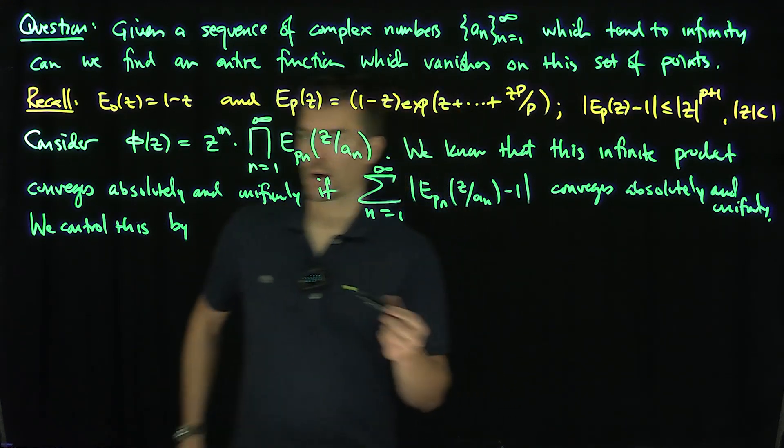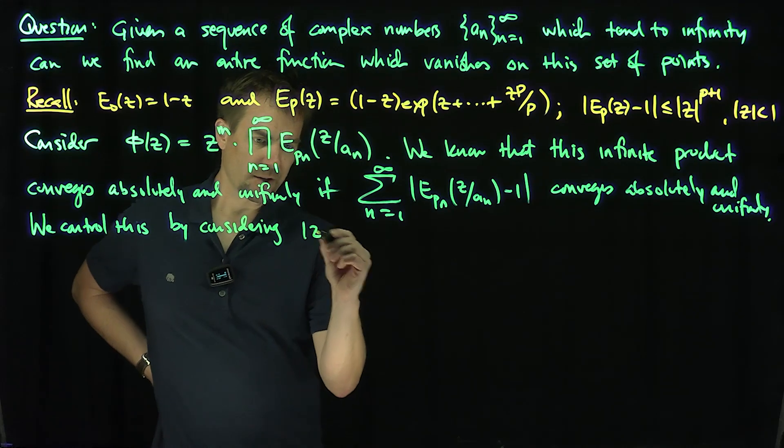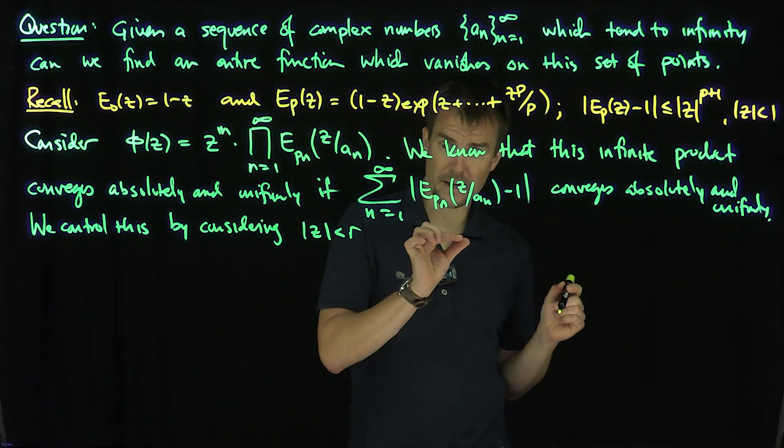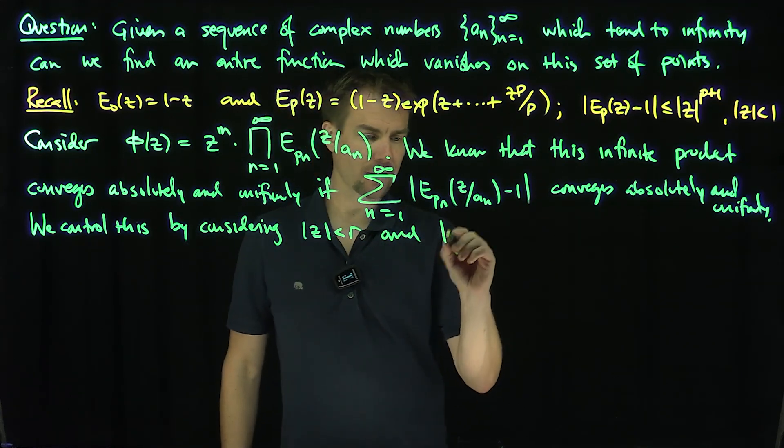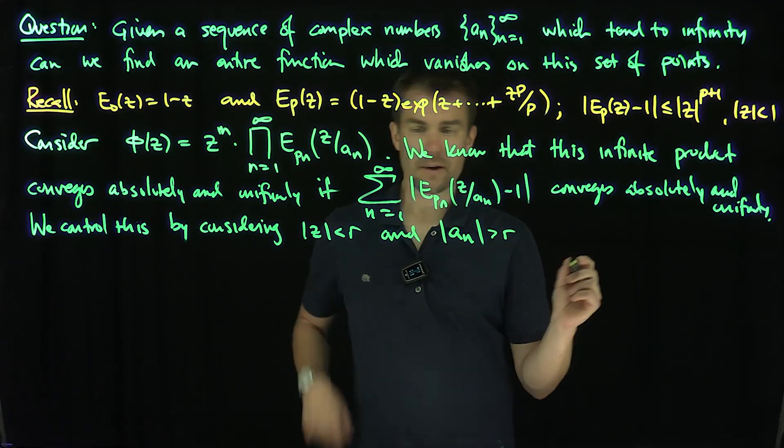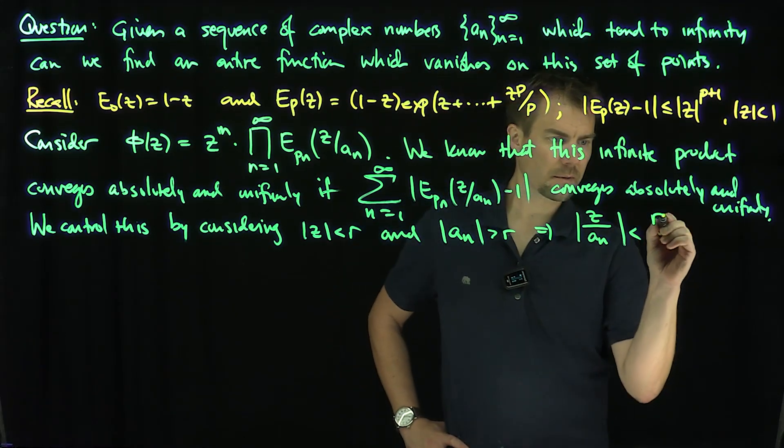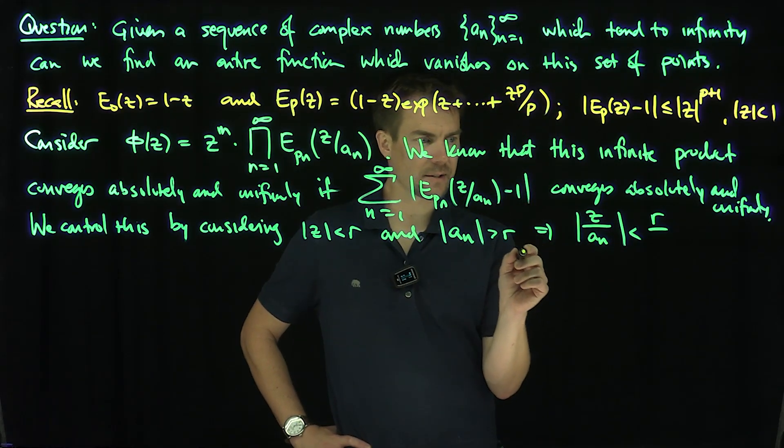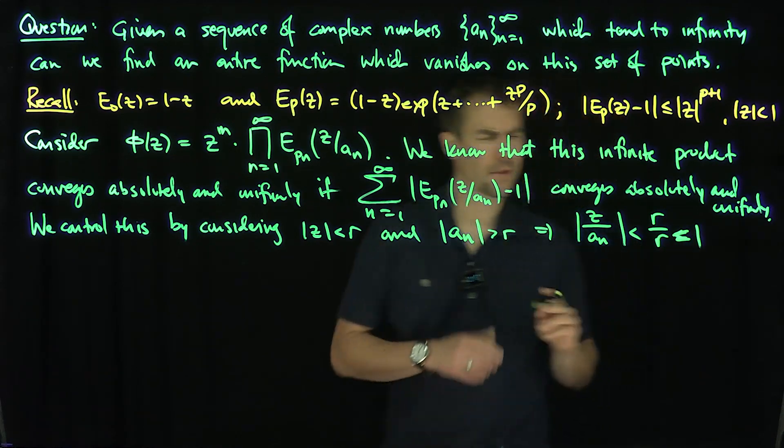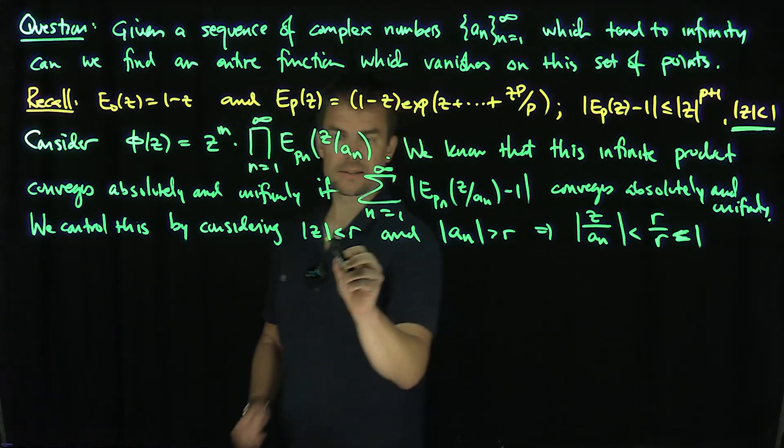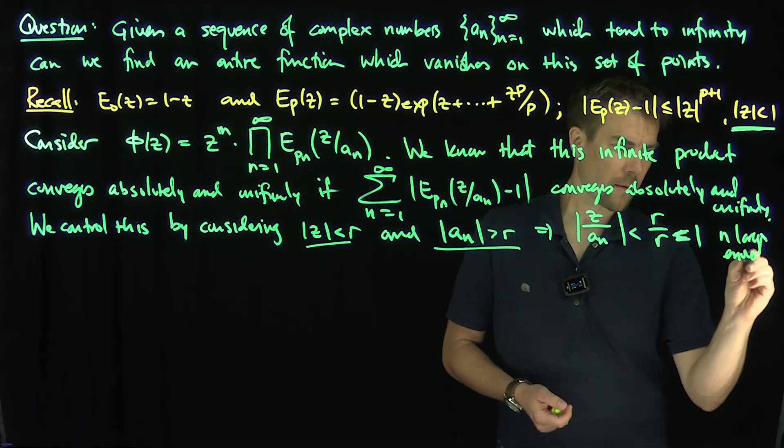We control this by considering modulus of z less than r. That will control z. And I can do this for all r. Modulus of z less than r, and I need to assume that modulus of a_n is also bigger than what? Then this implies that modulus of z over a_n is less than what? Well, z is less than r, and a_n is bigger than r, so 1 over a_n is less than r. That's equal to 1, actually. So I can now use this estimate. If z is less than r, and modulus of a_n is bigger than r, that's eventually going to happen, for n large enough.